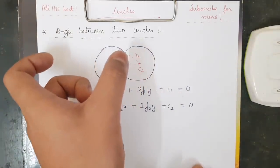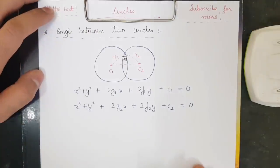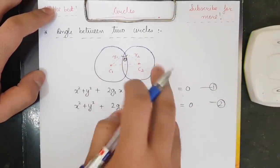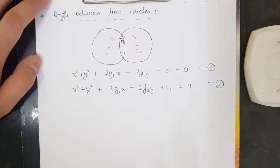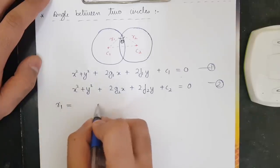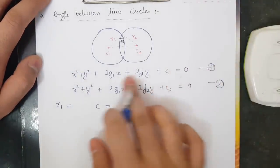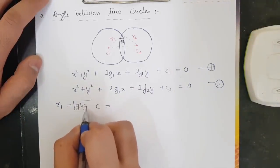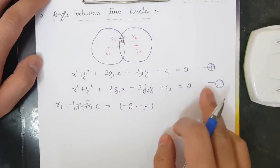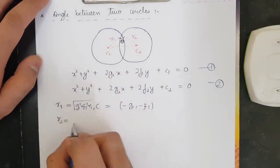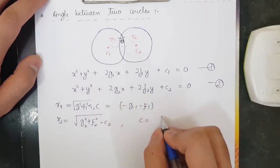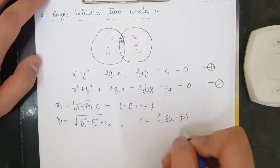First, let us find the angle between two circles, then move on to orthogonality. I have two circles: equation number one and equation number two. My tip is that whenever you have two circles, write the radius and center for each. Radius one is √(g1²+f1²−c1), center one is (−g1, −f1). Similarly, radius two is √(g2²+f2²−c2), center two is (−g2, −f2).